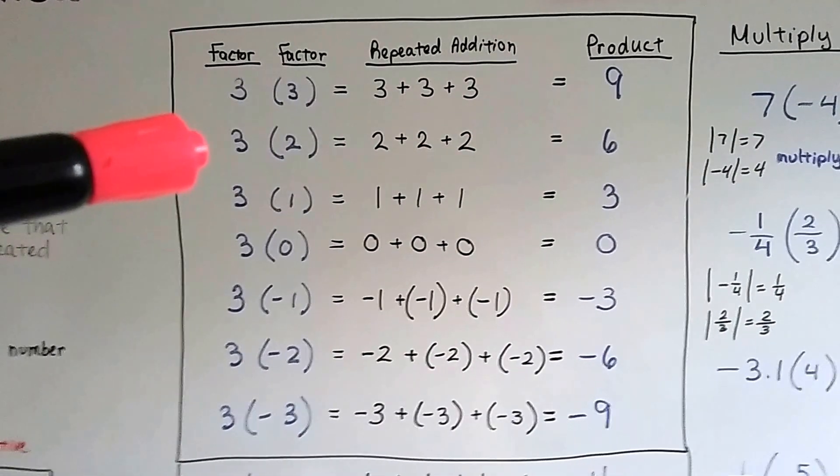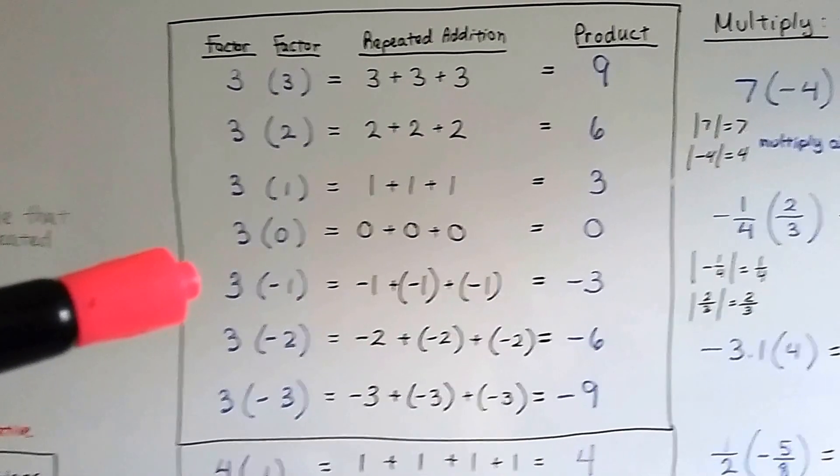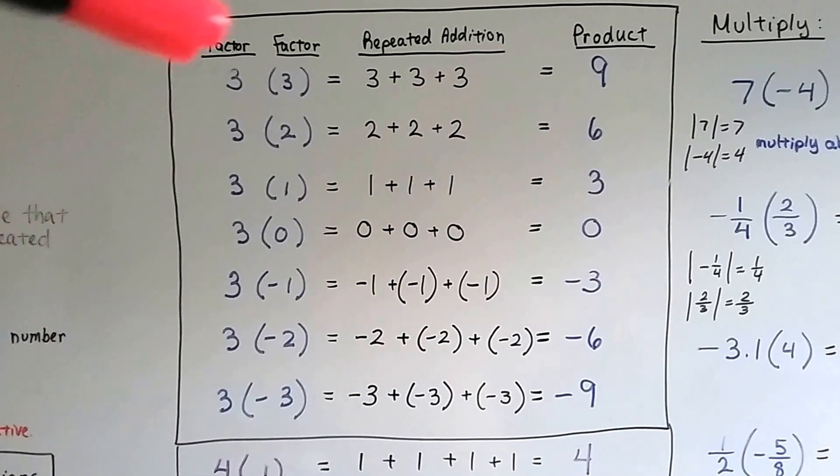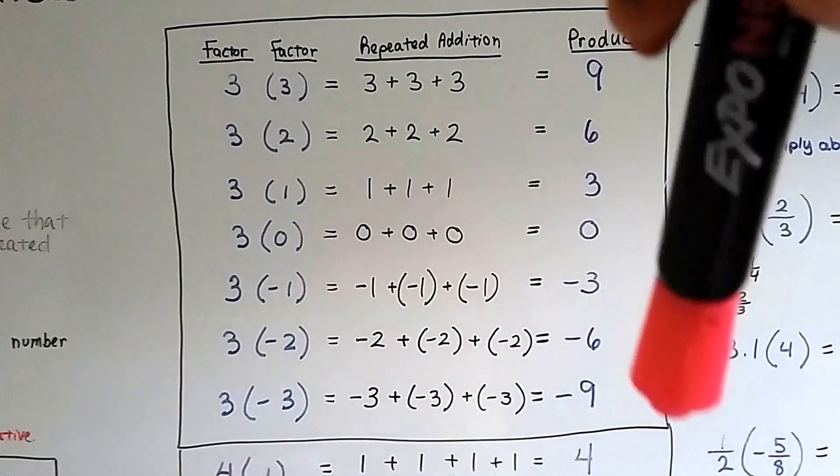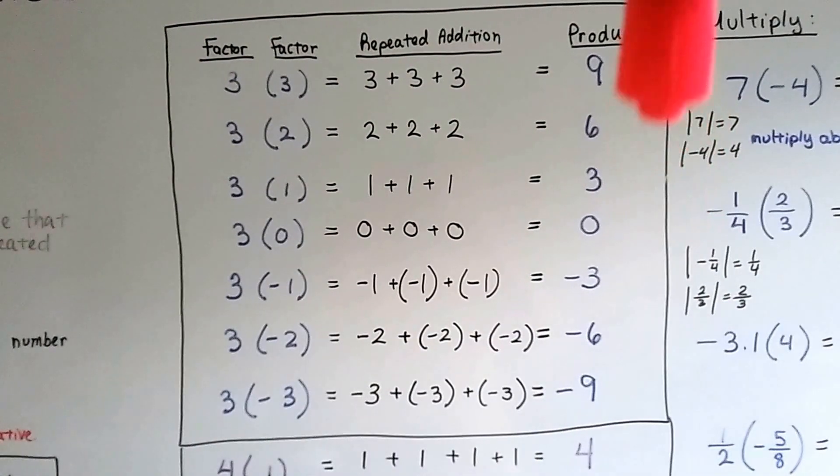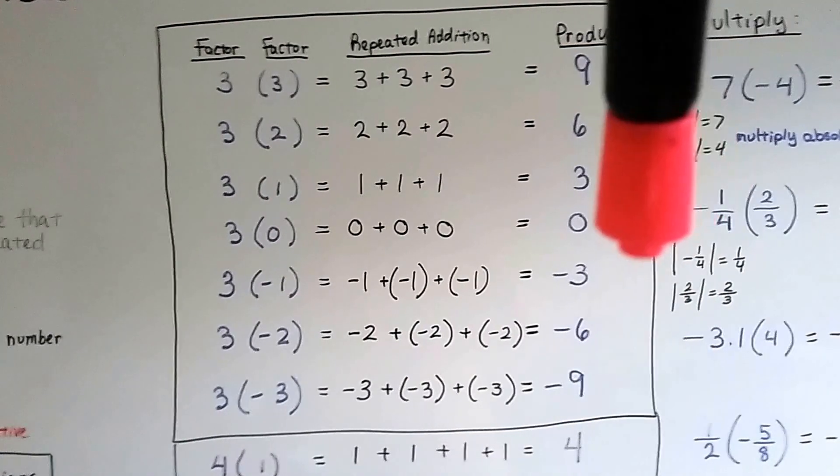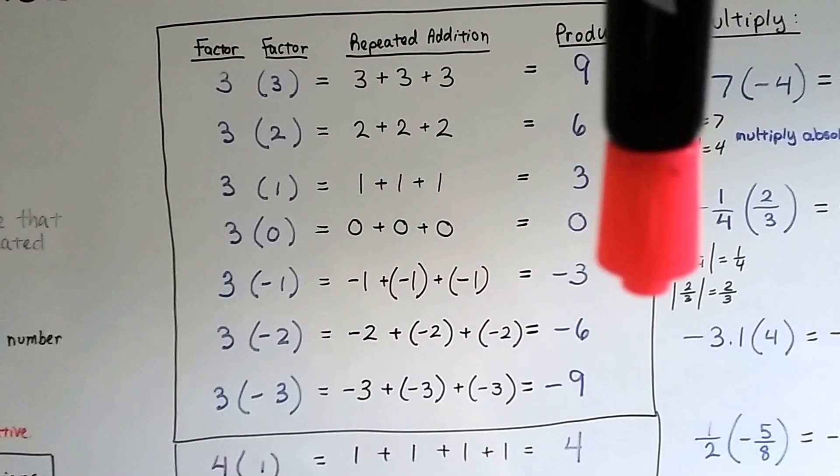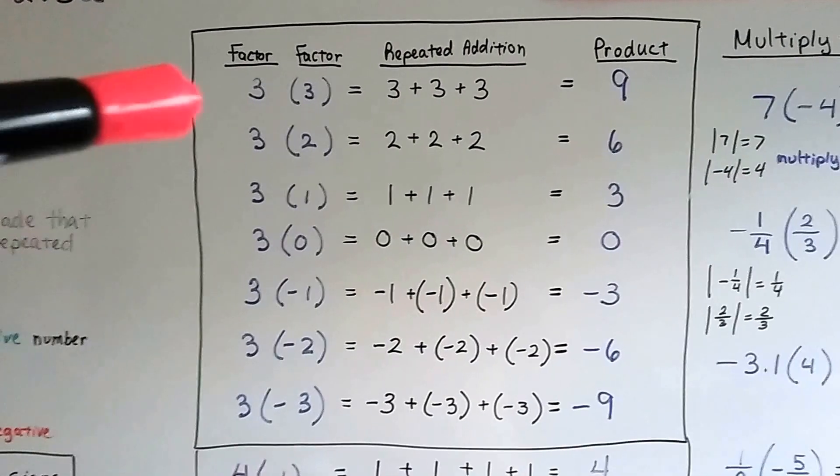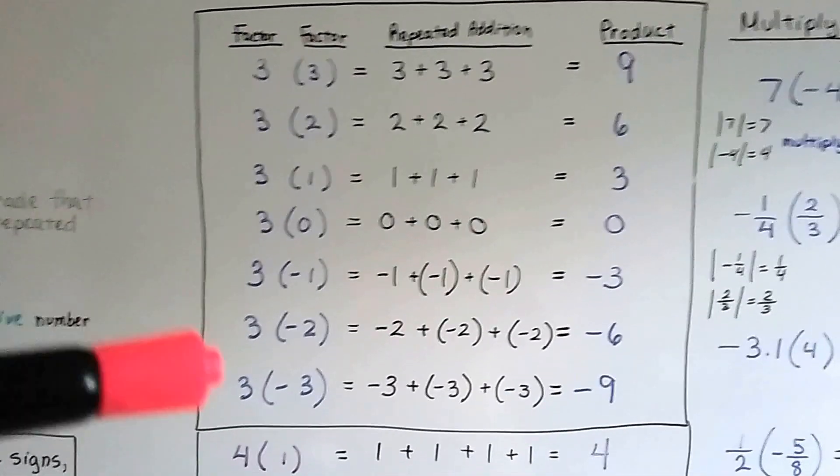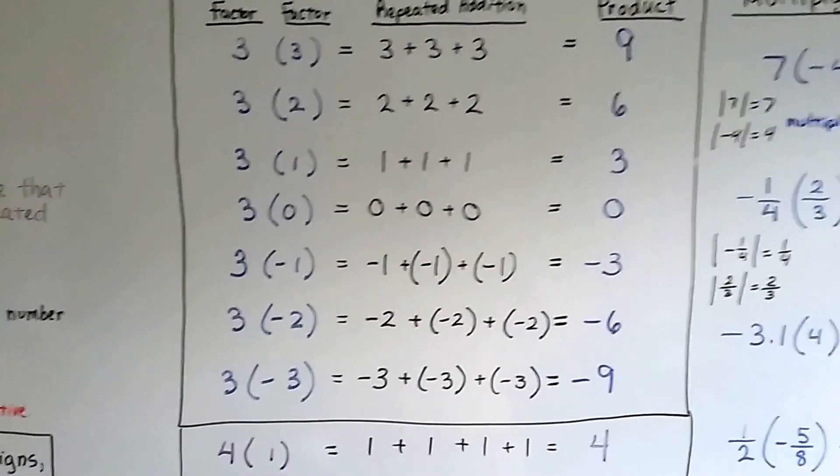Well, as we do 3 times 2, we get 6. 3 times 1 is 3. 3 times 0 is 0. And look what happens when we get to 3 times negative 1 and 3 times negative 2 and 3 times negative 3. If you look at these products, it's skip counting and going up into the positives as we go up and down into the negatives as we go down. 0, 3, 6, 9, 0, negative 3, negative 6, negative 9. So we can tell what would happen if we did 3 times a positive 4 or 3 times a negative 4. It would just keep going up into the positives or going down into the negatives.